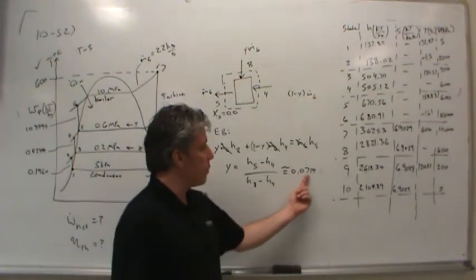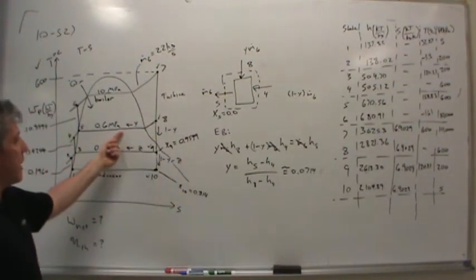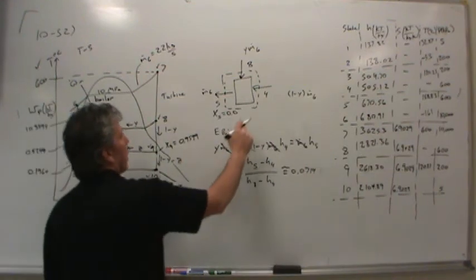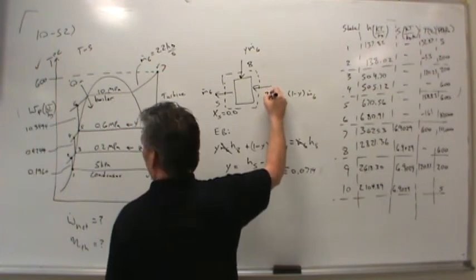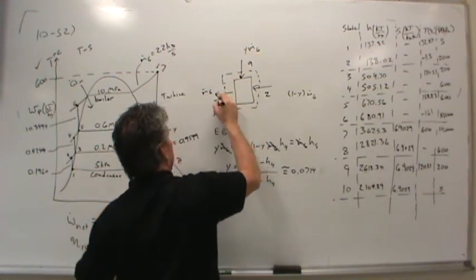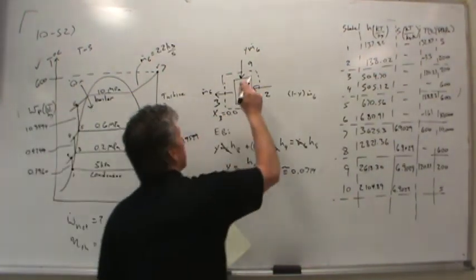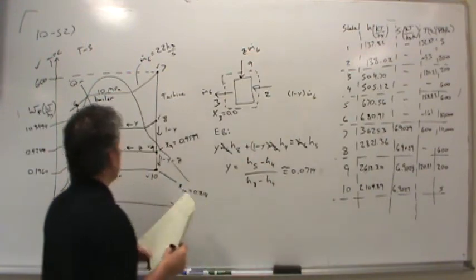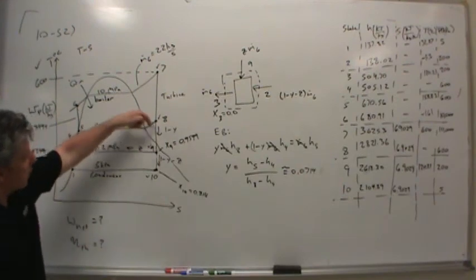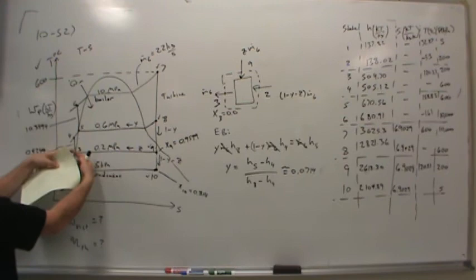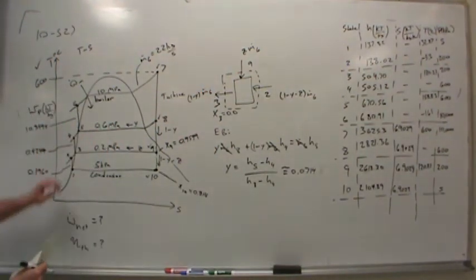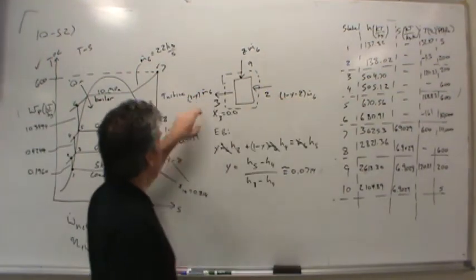So my estimate of 10% was a little high — it's about 7.14%. We can do the same thing for the other open feedwater heater. Sub-cooled condensate comes in from state 2, bleed steam comes in from state 9, and the result is state 3 as saturated liquid. Now there's a z fraction going this way and 1 minus y minus z going the other way, recombining at state 3, which carries 1 minus y of the total flow.